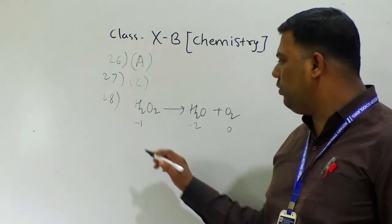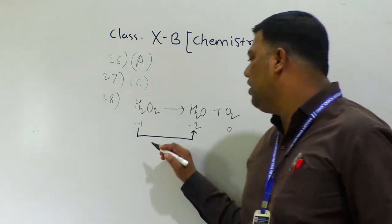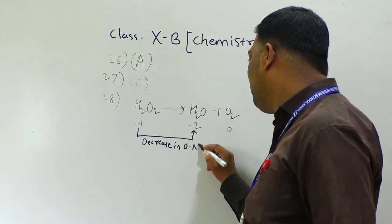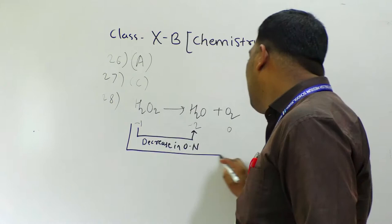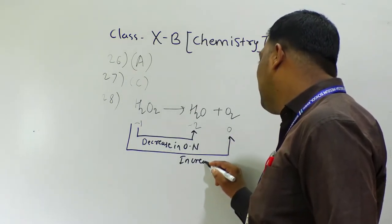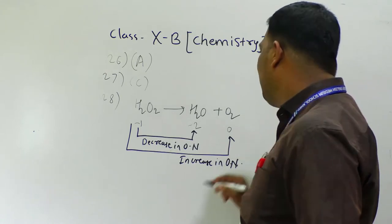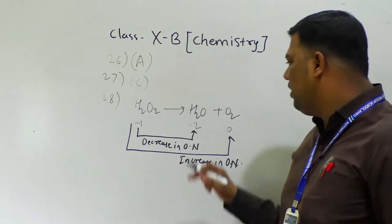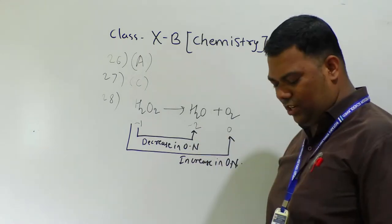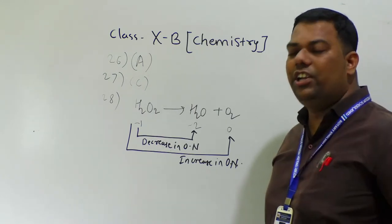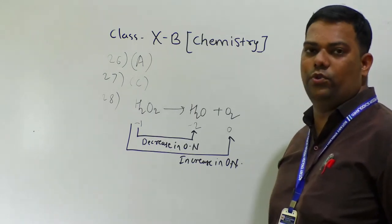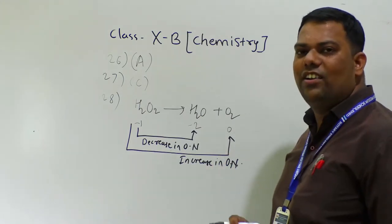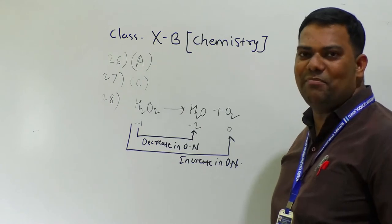From minus one to minus two means a decrease in oxidation number. From minus one to zero means an increase in oxidation number. So H₂O₂ has oxygen at minus one; in H₂O oxygen is minus two, and in O₂ it is zero (elemental state). Decrease in oxidation number is reduction; increase in oxidation number means oxidation. So the answer is both A and B — option C.